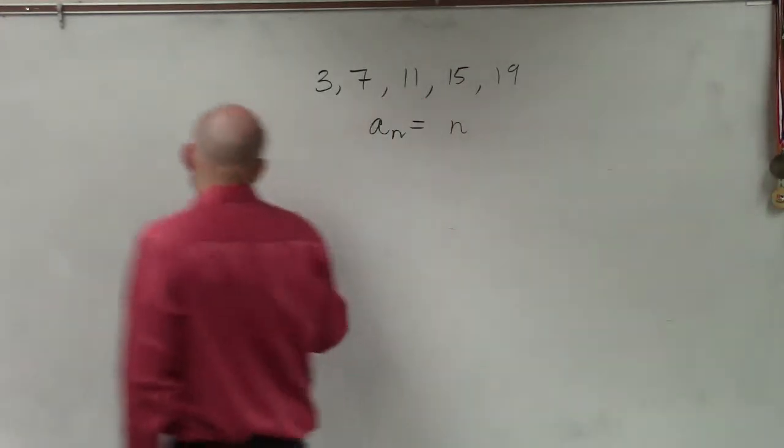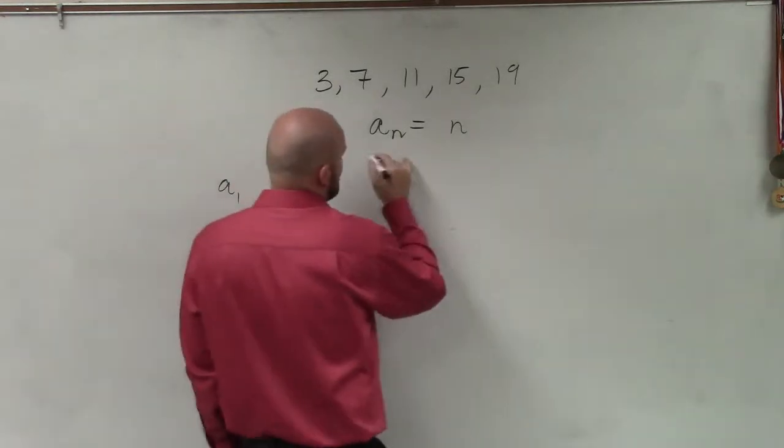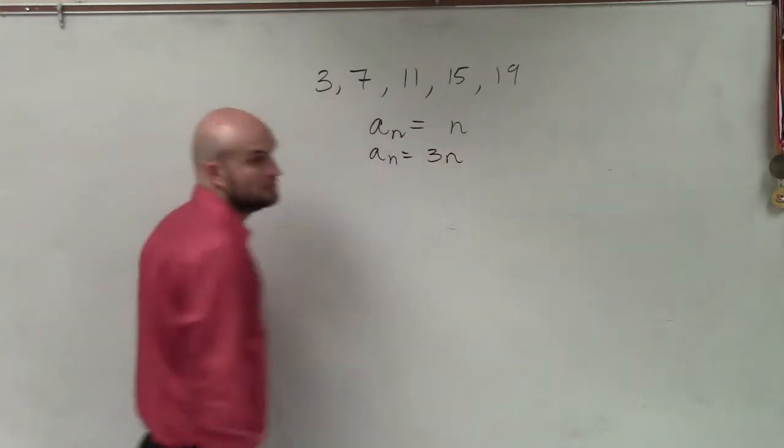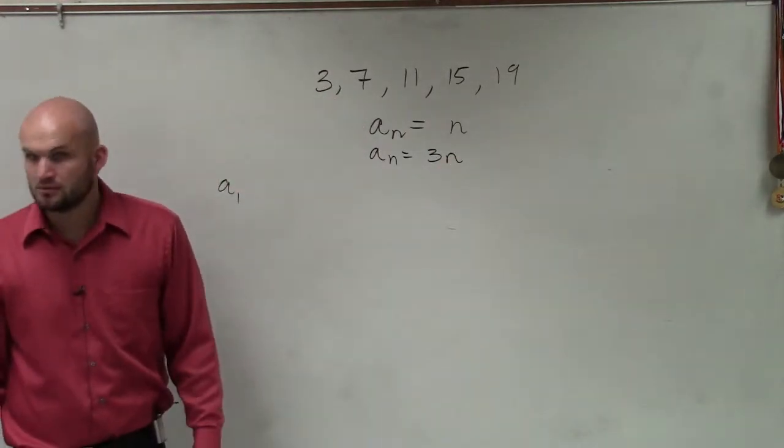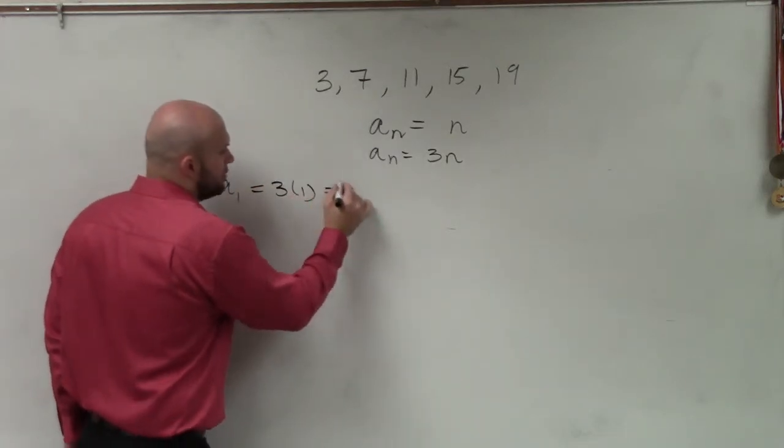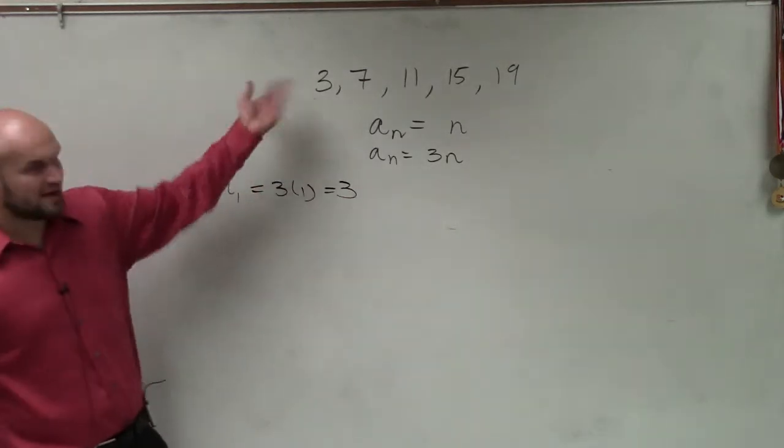Well, obviously, you could say a sub n, let's try this, 3 times n. Would that work for a sub 1? Yeah. Because a sub 1 would be 3 times 1, which equals 3. So that works for a sub 1.